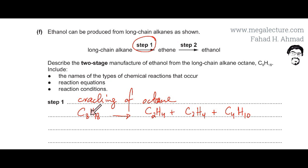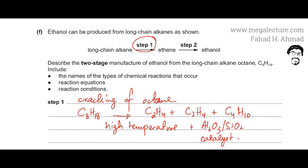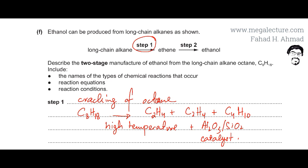The conditions required for cracking are high temperatures plus a catalyst in the form of aluminium oxide (Al2O3) or silicon dioxide (SiO2). You can also use pumice, broken pot, or zeolite catalyst — all are mixtures of Al2O3 and SiO2. So that is the first step: ethene formed from a long-chain hydrocarbon broken down into smaller, more useful molecules.